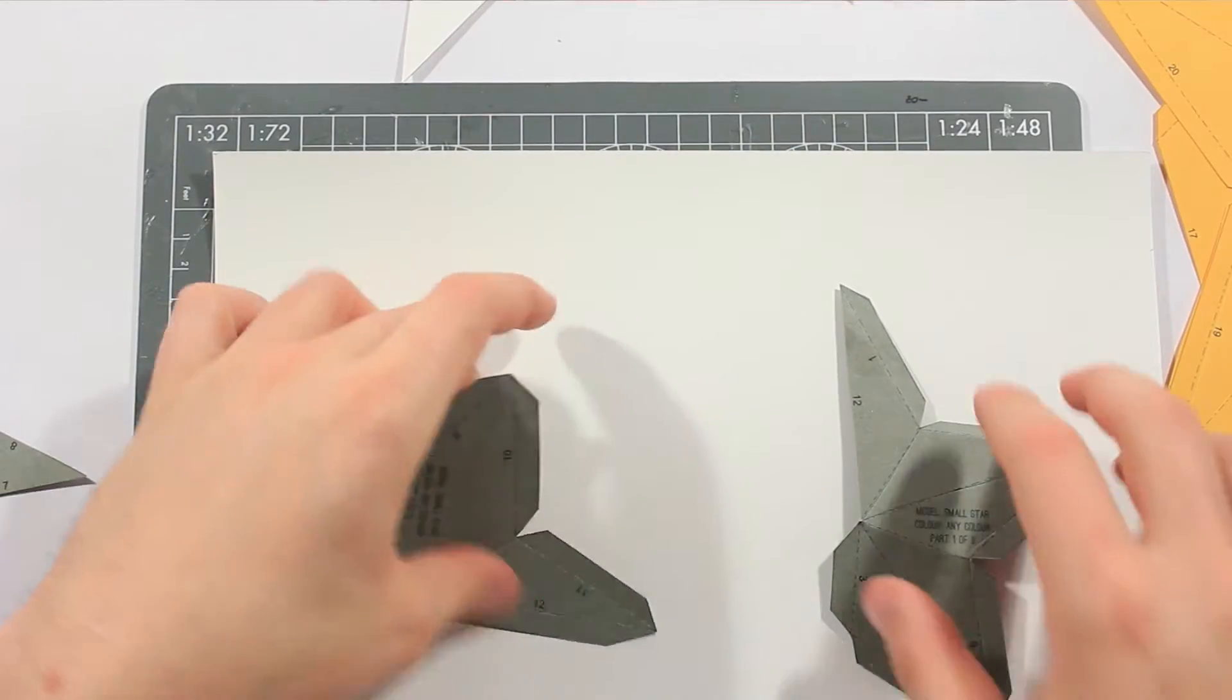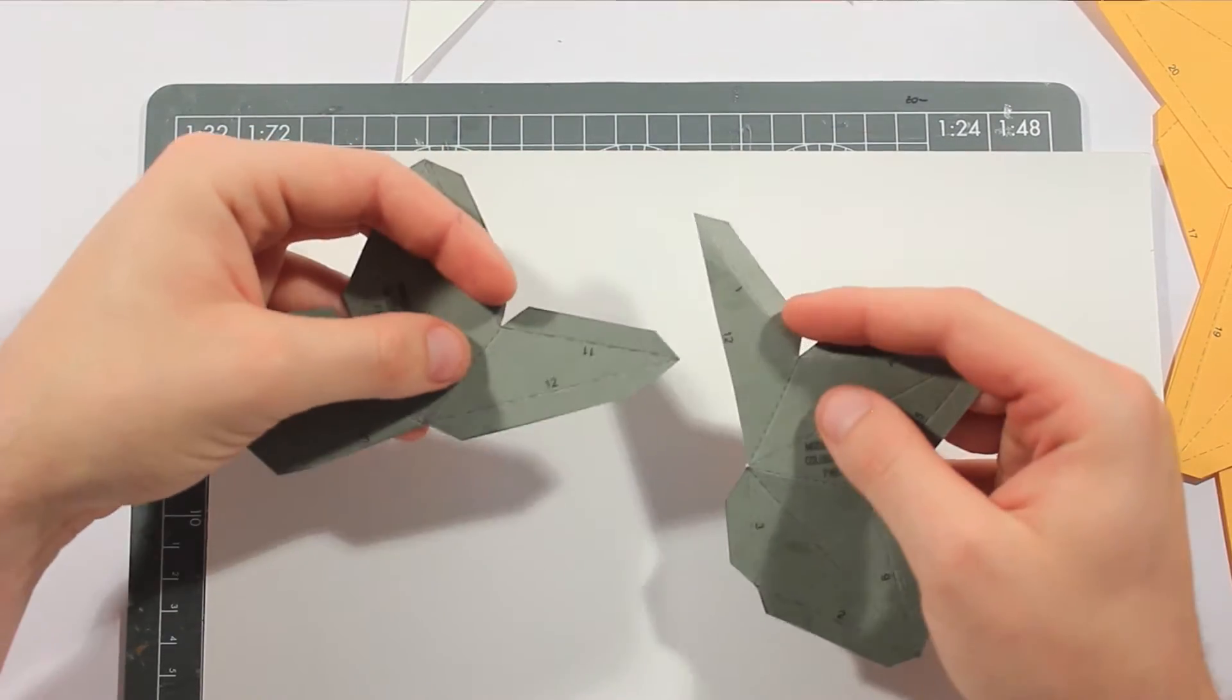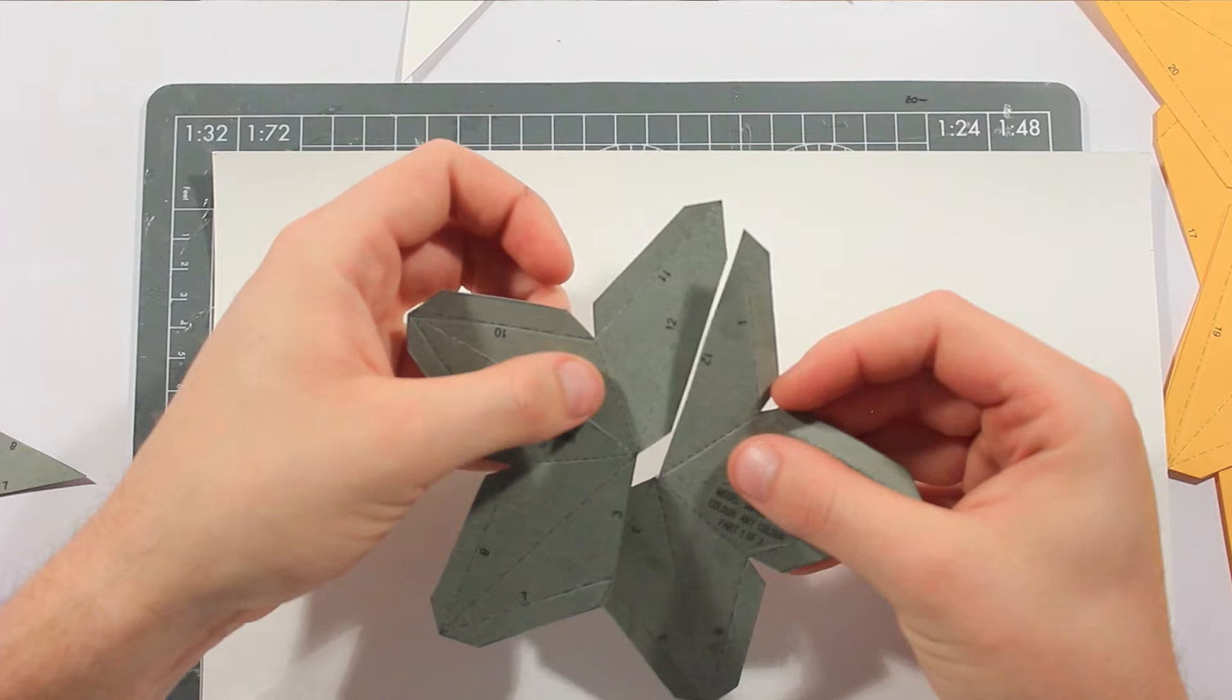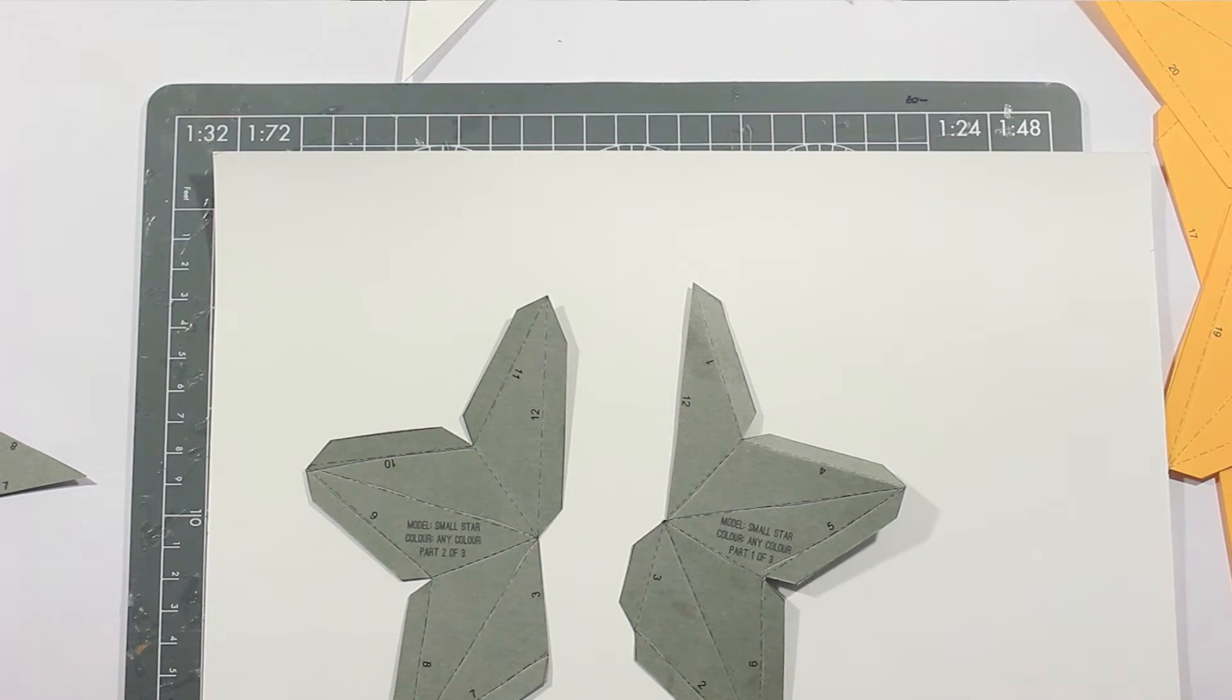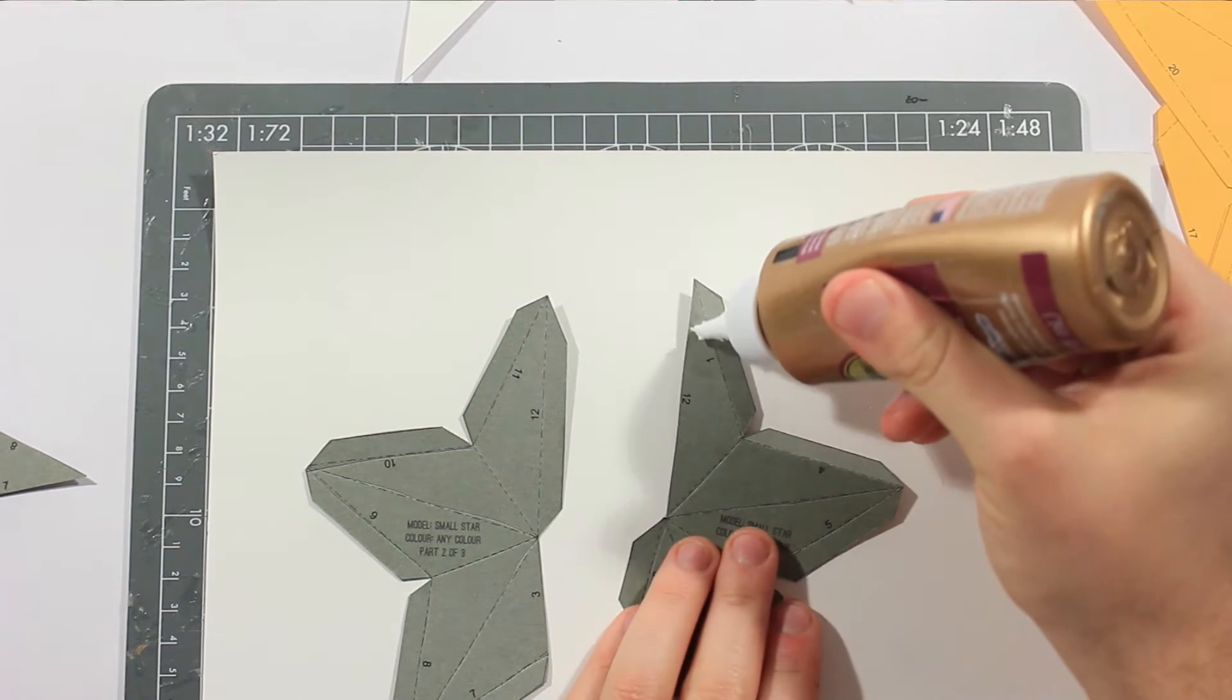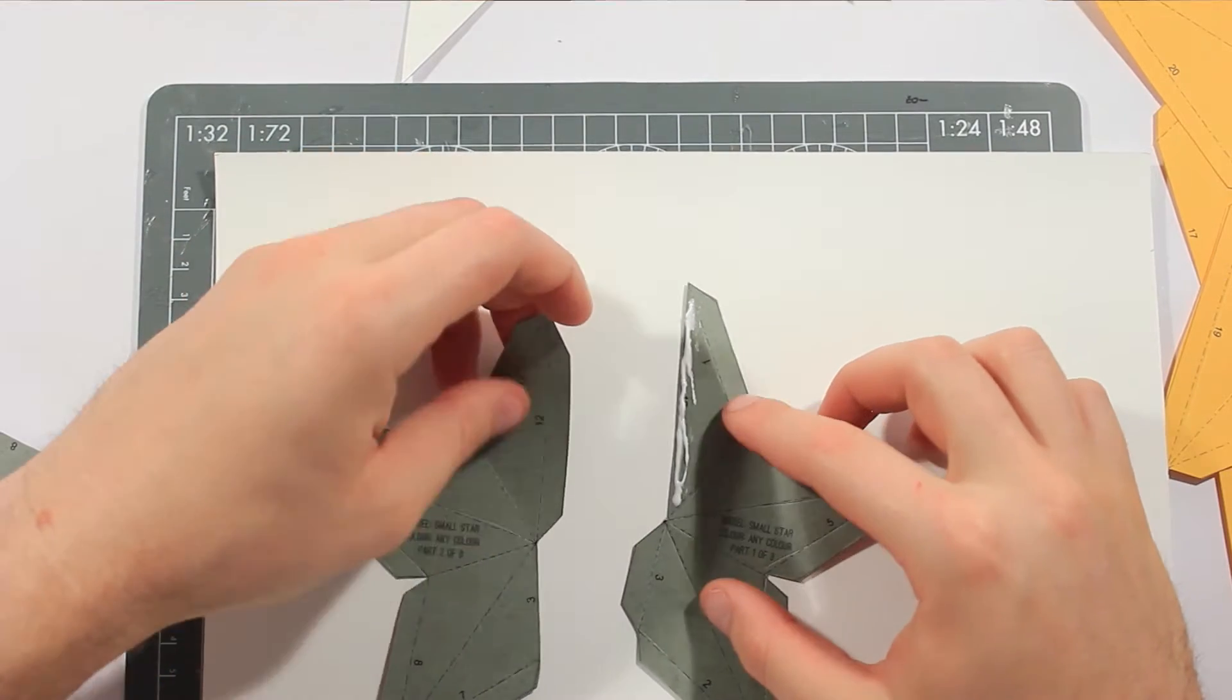All you need to do is just match up the numbers, so you've got number 12 there, number 12 there. All you have to do is just stick it together like that. Remember to put the glue on the actual number itself, because the tabs go on the number.